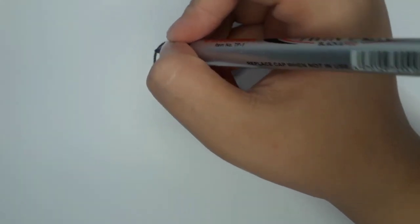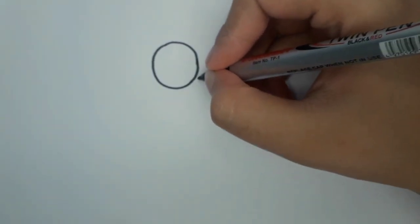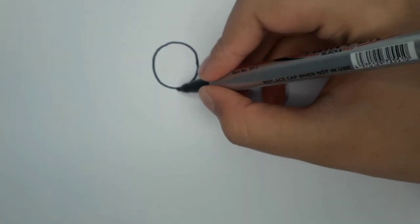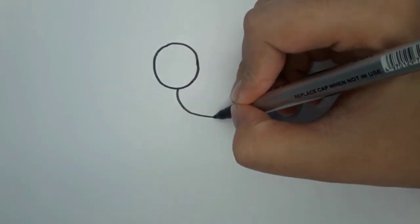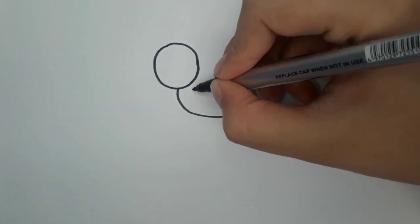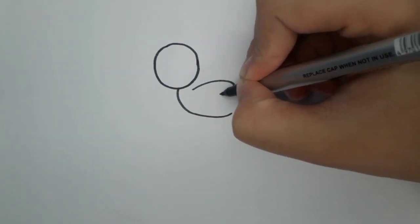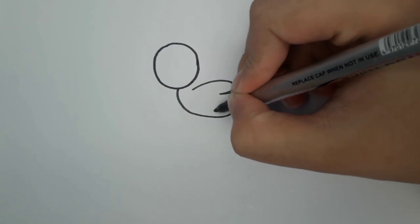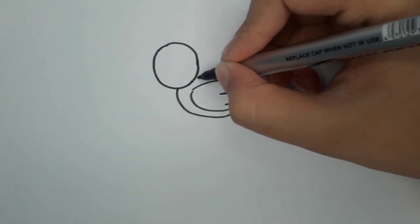First things first, let's gather our quacktastic tools. Paper, our pond of possibilities. Pencil, our feathery friend for sketching. Eraser, for any wobbly lines. Markers, a rainbow flock to bring your duckling to life.